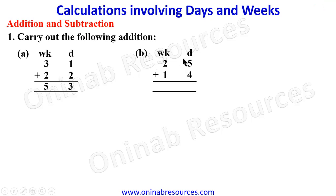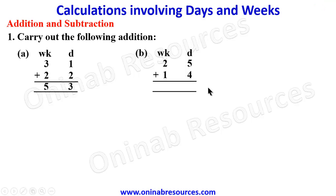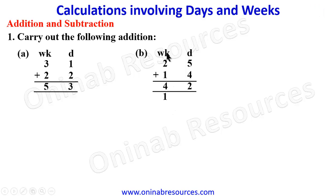We go to B. For B, we have 2 weeks 5 days to be added to 1 week 4 days. We start the addition from days. 5 days plus 4 days gives 9 days. In 9 days, we have 1 week 2 days. So we write down the 2 days and carry the 1 week to the week column. Adding 2 plus 1, then 3 plus 1 gives 4. So that 2 weeks 5 days plus 1 week 4 days gives 4 weeks 2 days.